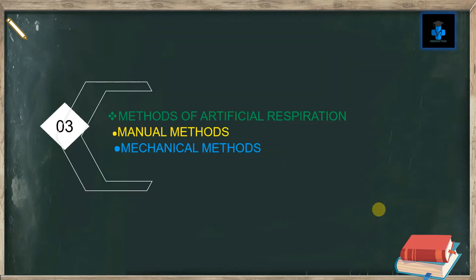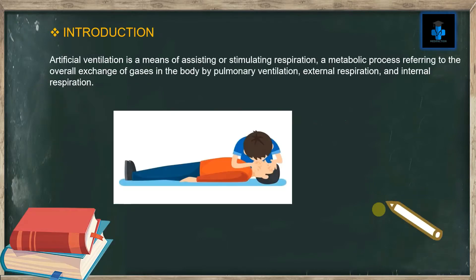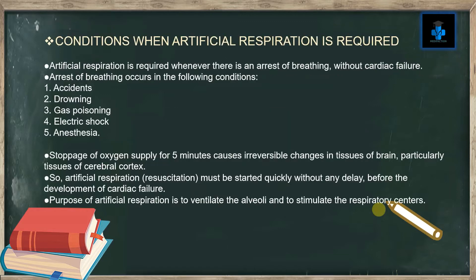Introduction: Artificial ventilation is a means of assisting or stimulating respiration — a metabolic process referring to the overall exchange of gases in the body by pulmonary ventilation, external respiration, and internal respiration. Conditions when artificial respiration is required: Artificial respiration is required when there is an arrest of breathing without cardiac failure.